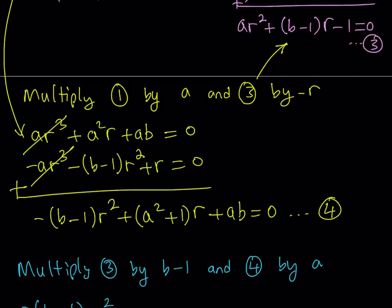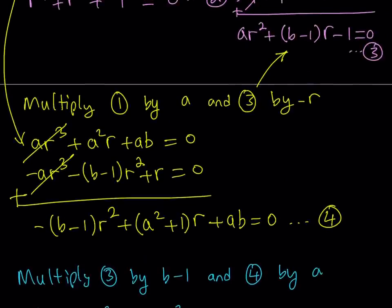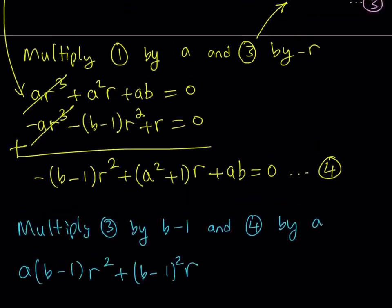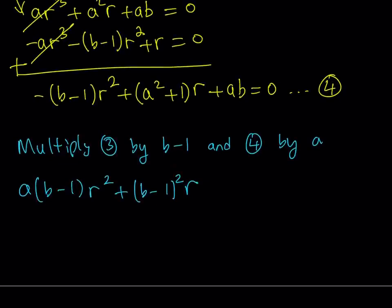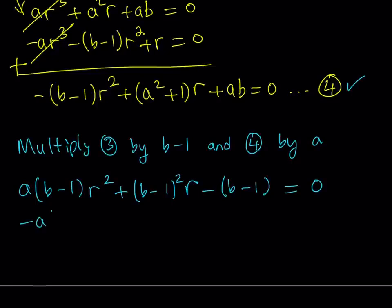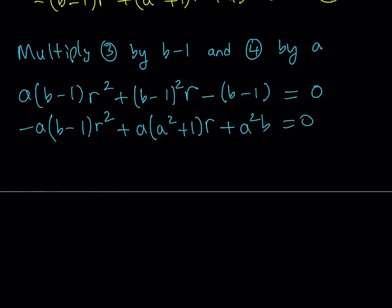Now let's take equation number four and multiply both sides by A. That gives us negative A(B minus one) R squared, plus A(A squared plus one) R, plus A squared B equals zero. Now we add these two equations. R squared cancels out. We can group the R terms: the coefficient of R is (B minus one) squared plus A times (A squared plus one). And the constant terms give us A squared B minus (B minus one), which we can write as A squared B minus B plus one. This is equation number five.